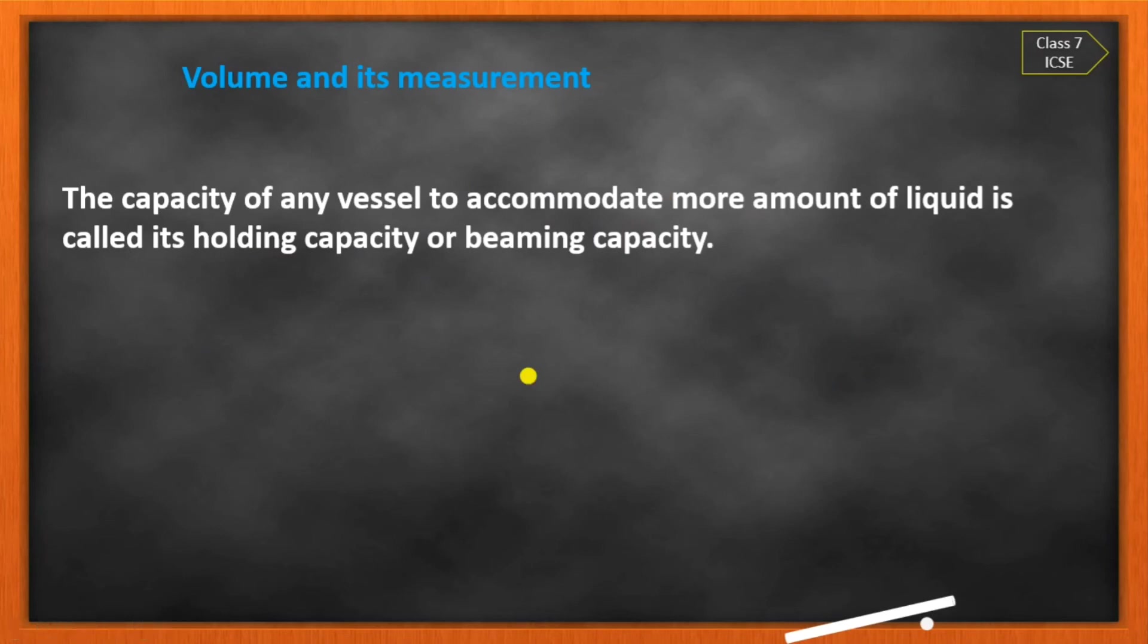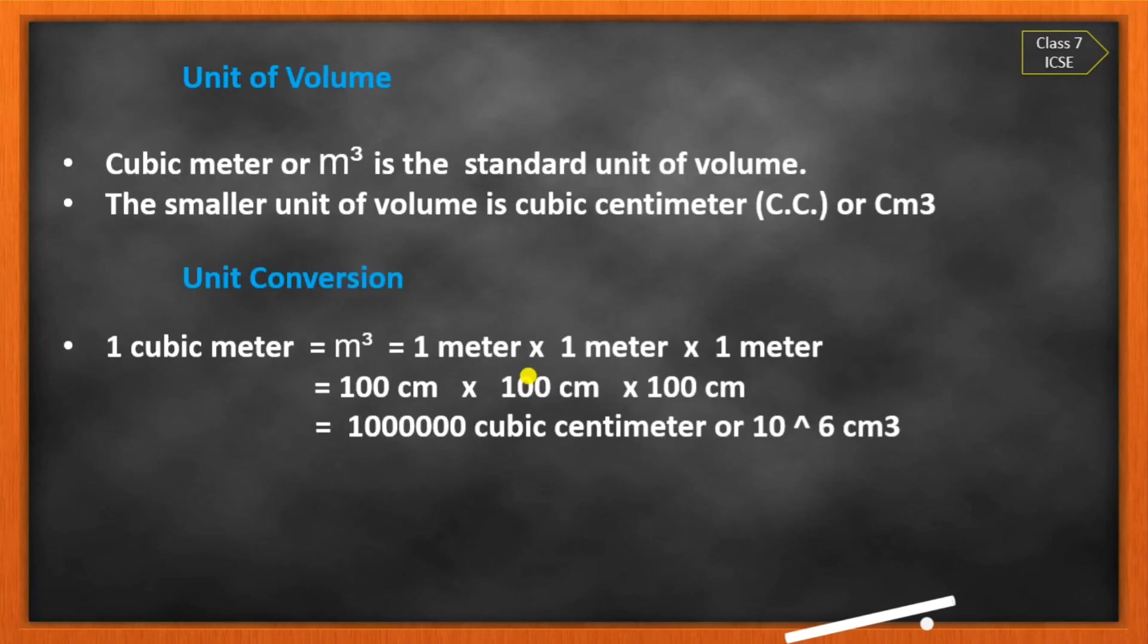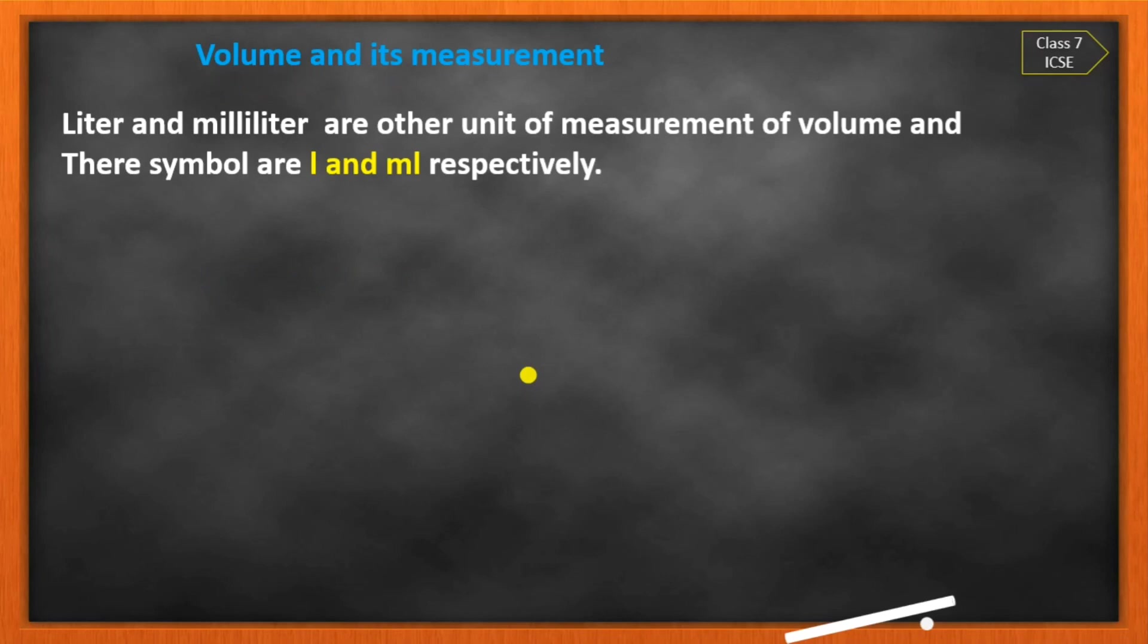Now the unit of volume: cubic meter, that is m³, is the standard unit of volume. The smaller unit of volume is cubic centimeter, that is cc or cm³. Unit conversion: one cubic meter equals 1 meter × 1 meter × 1 meter, that can be written as 100 centimeter × 100 centimeter × 100 centimeter, which equals 10 to the power 6, or 10 lakh cubic centimeters. Liter and milliliter are other units of measurement of volume, and their symbols are L for liter and mL for milliliter respectively.